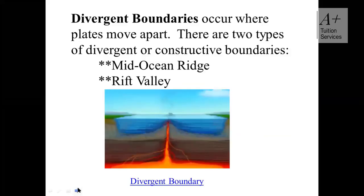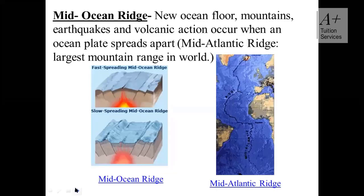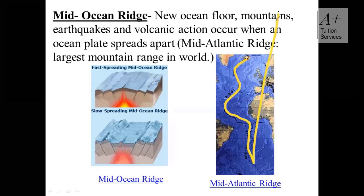The Mid-Atlantic Ridge spans from North America down between South America and Africa — it's a very long ridge. New ocean floor, mountains, earthquakes, and volcanic action occur when an ocean ridge spreads apart. The Mid-Atlantic Ridge is one of the largest mountain ranges in the world, spanning from the top of North America to the bottom of South America.